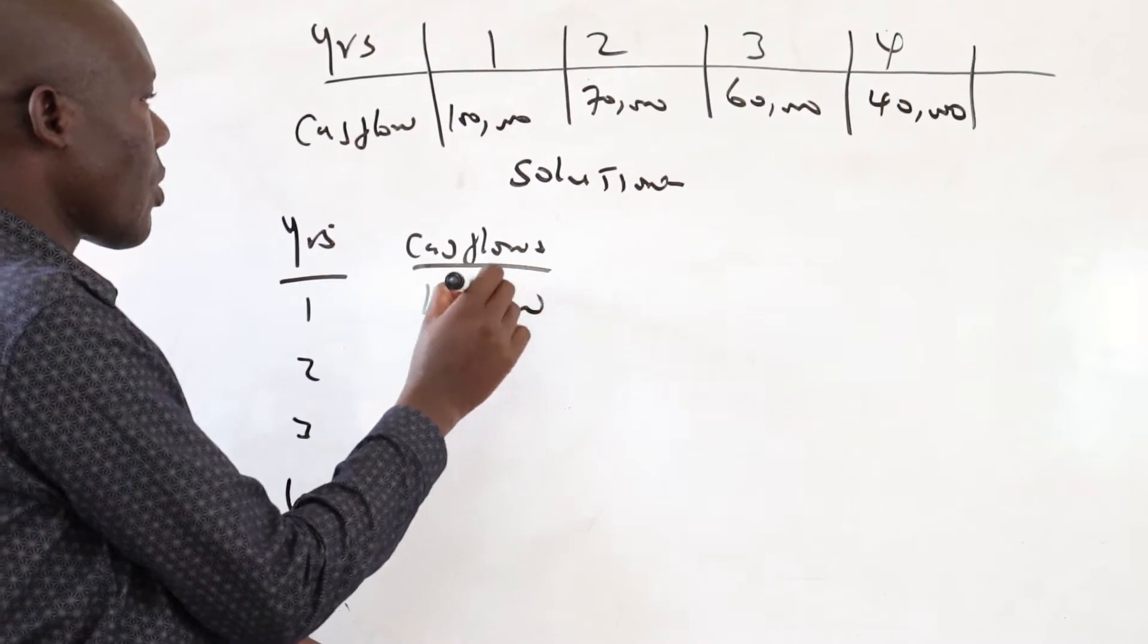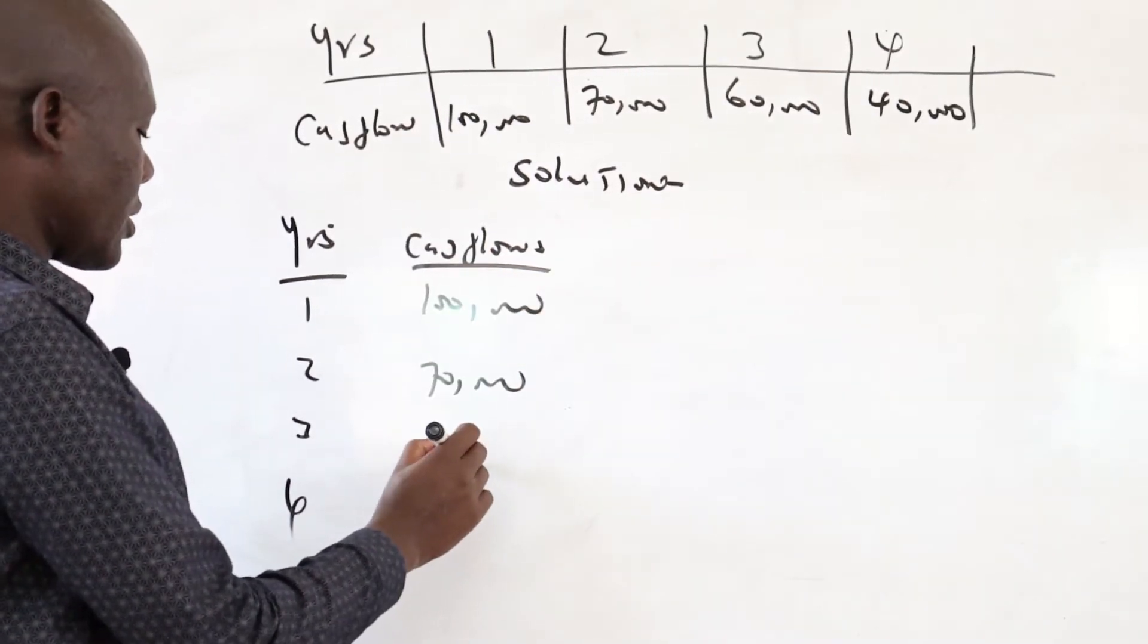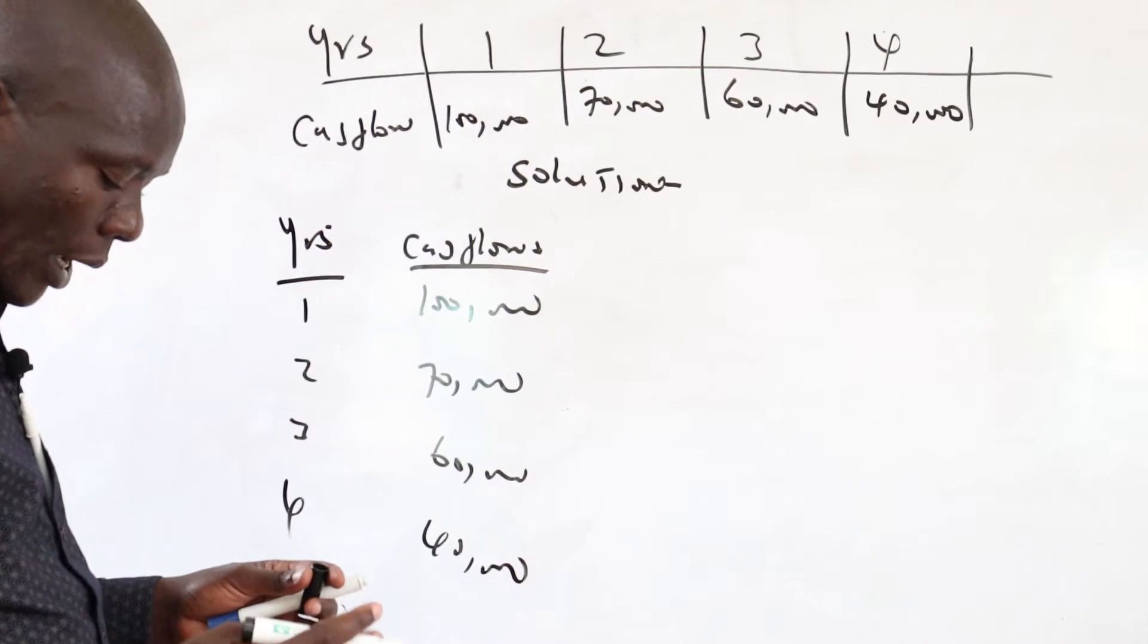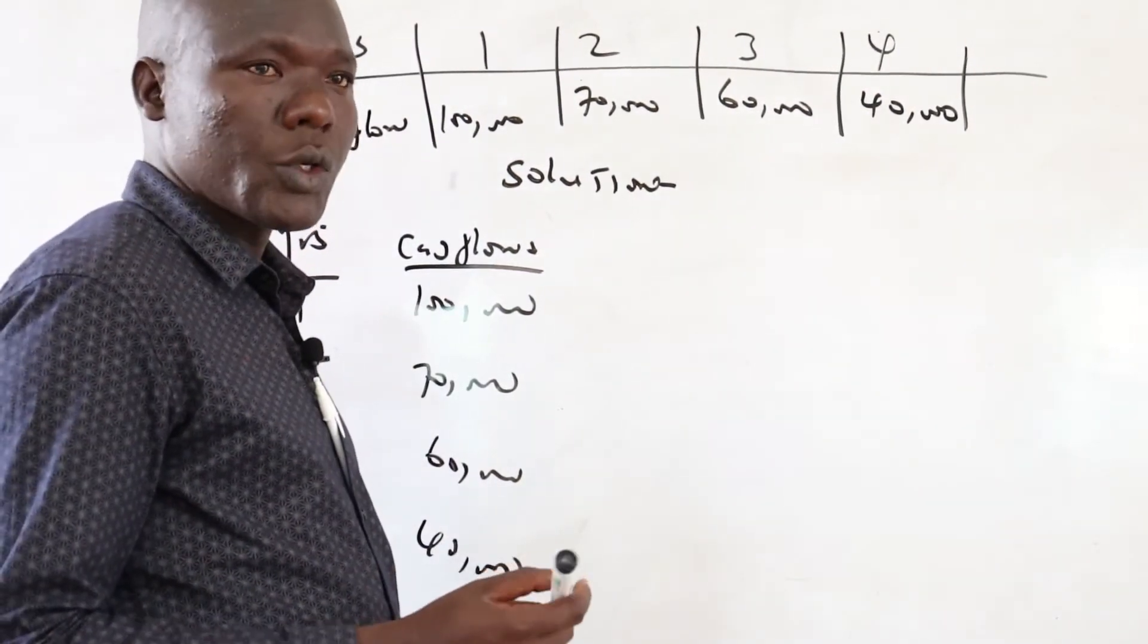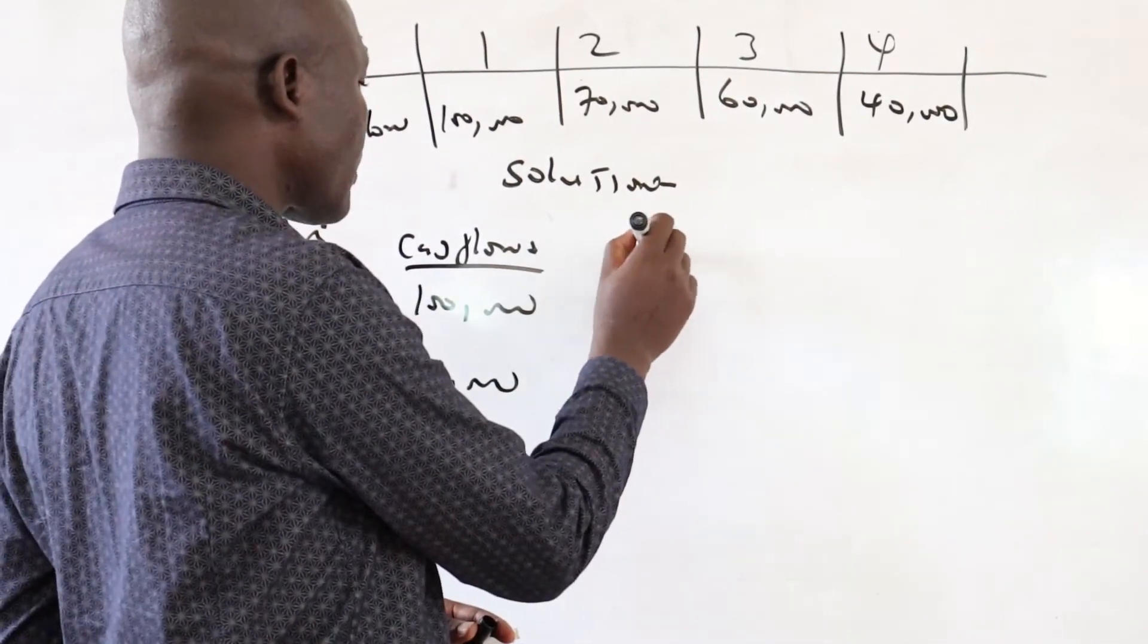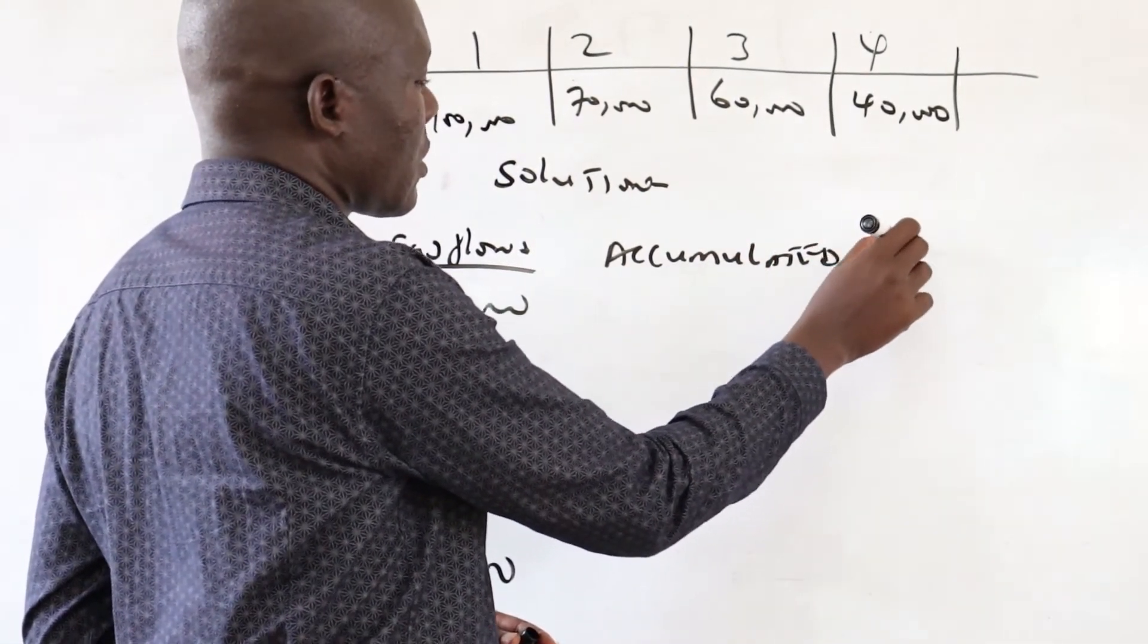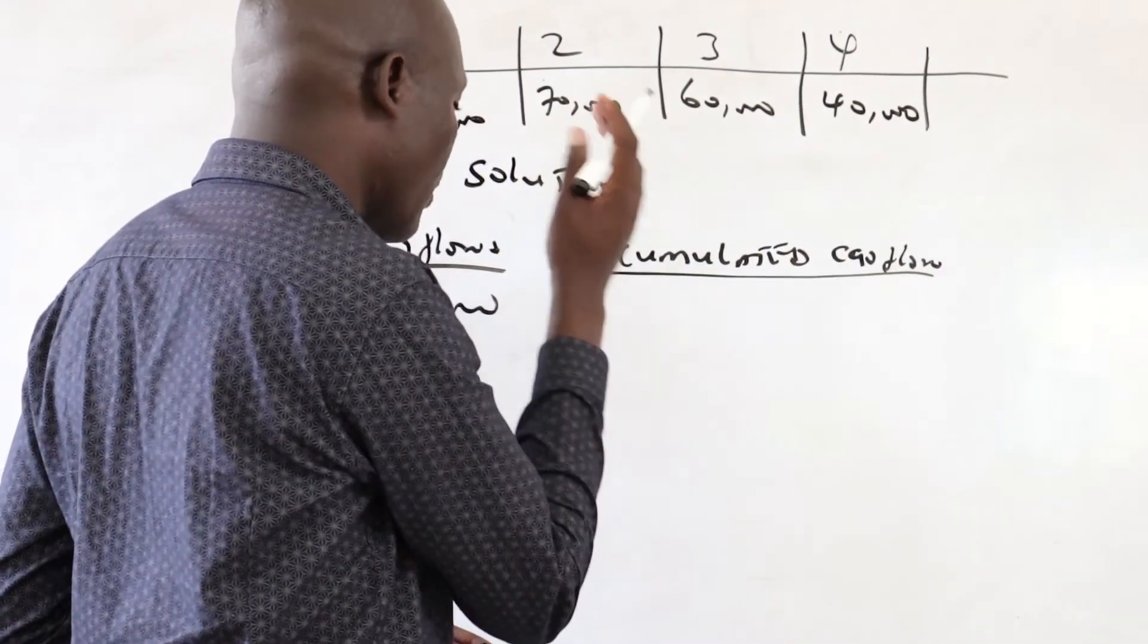So 100,000 for period one, 70,000 for period two, 60,000 for period three, and 40,000 for period four. Then we create a column of accumulated cash flow to know after how long should we recoup the amount.